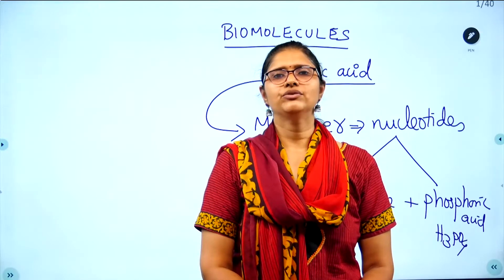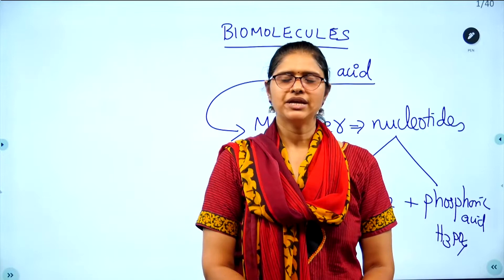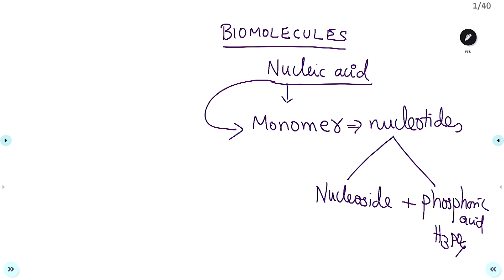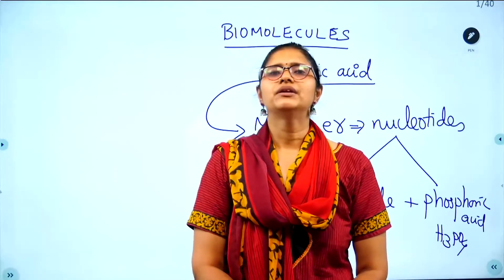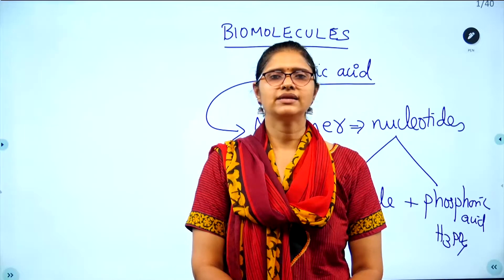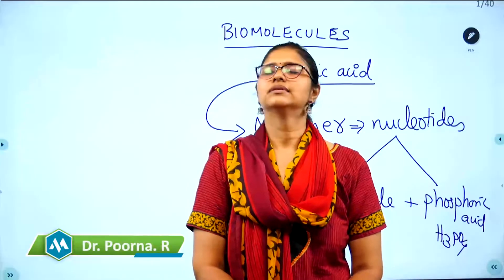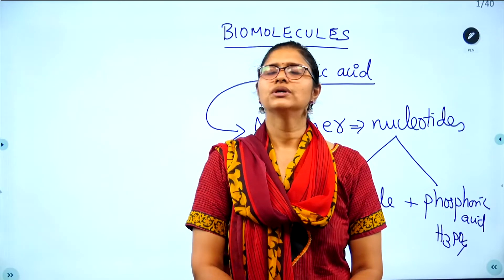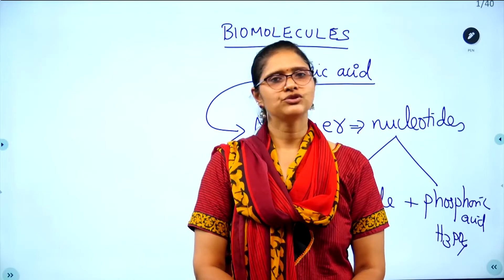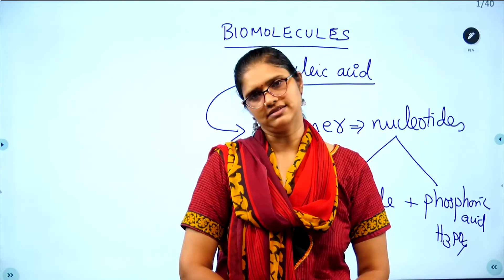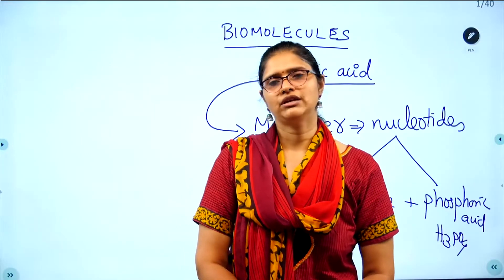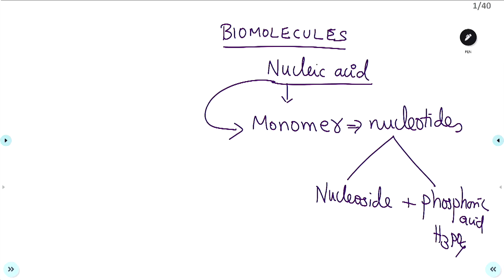In this video we are going to see about biomolecules — specifically nucleic acids. In the previous video we saw carbohydrates, vitamins, and proteins. Nucleic acids are nothing but DNA and RNA: deoxyribonucleic acid and ribonucleic acid. DNA is used to pass the hereditary character, and RNA is used for protein synthesis. DNA is also involved in protein synthesis, but its main role is passing the hereditary character.